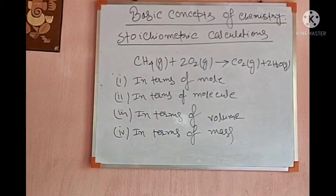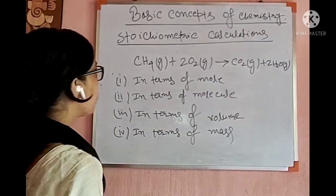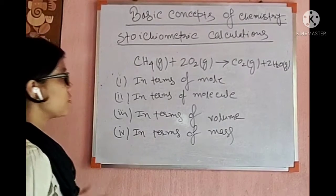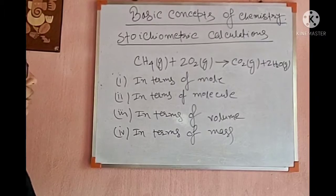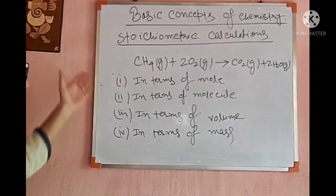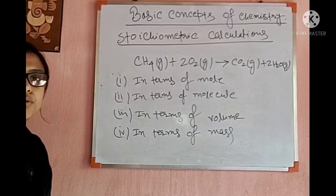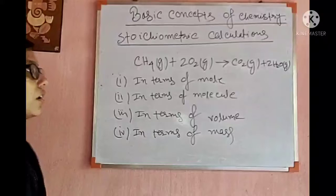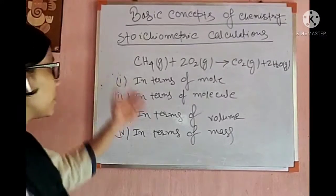I have written a general chemical equation — the combustion of methane in oxygen giving out carbon dioxide and water. There are four types of how to represent the stoichiometry of a chemical equation.